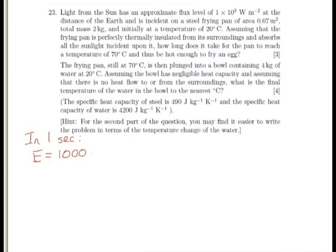So that's 1000 watts per square meter multiplied by an area of 0.07 meters squared. So the energy coming from the sun is 70 joules.